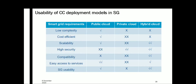Here is a comparison of cloud deployment models in smart grid. In terms of complexity, public cloud is low complexity while private and hybrid are more complex. In terms of cost efficiency, hybrid cloud is better than private cloud, and public cloud is better still. For scalability, hybrid cloud is best, followed by public cloud, and then private cloud. For security, private and hybrid are better than public cloud.